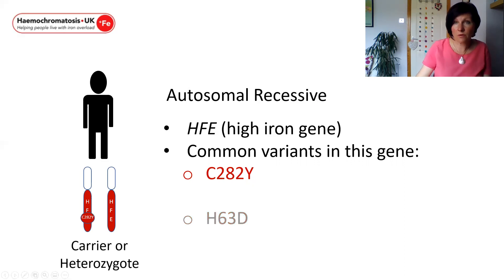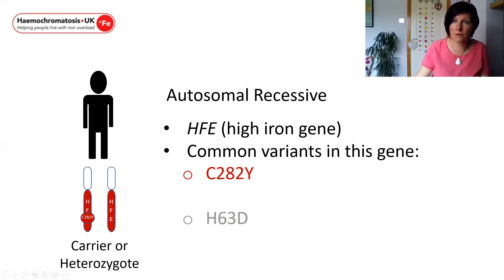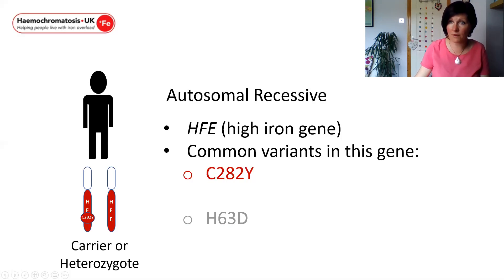If we view the man on the slide as having just one copy of the C282Y variant, we would refer to him as a carrier. He carries a single copy of the spelling mistake — the C282Y variant — but his second copy of the gene has no variant and is working, sufficient to compensate for the copy that isn't working. Therefore this gentleman is not at risk of developing symptoms.